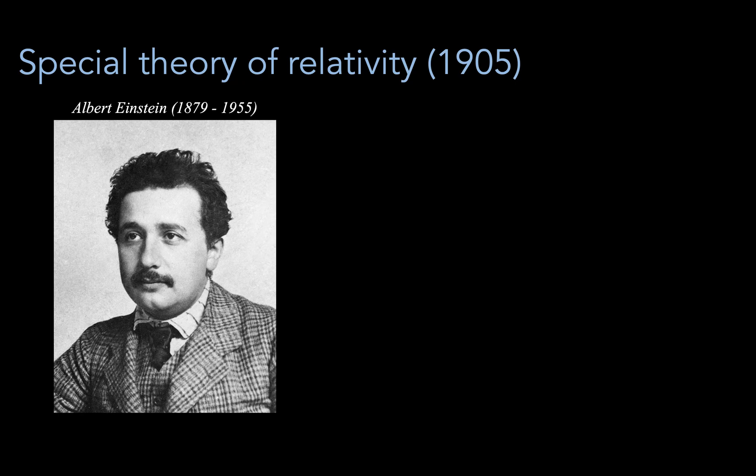This theory essentially addressed itself to the question of how should we interpret Maxwell's equation for the speed of light. We saw that there was this equation for the constancy of the speed of light. The question was, in what reference frame is this equation applicable?